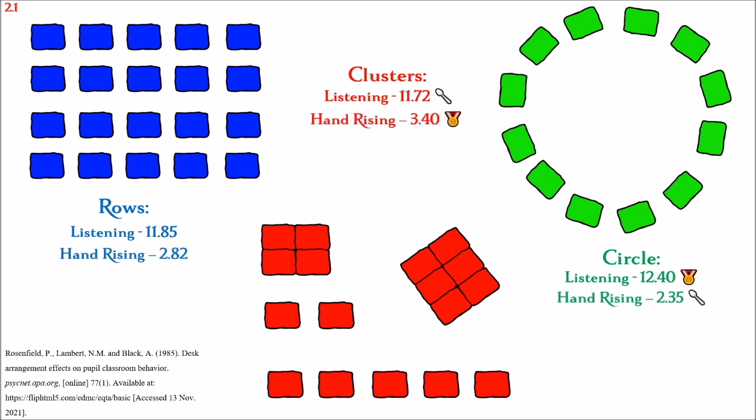Second positive behavior is hand-raising. Rows scored an average of 2.82, clusters scored an average of 3.40, and circle scored an average of 2.35. This shows that the highest participation happened with clusters, while the circles showed the lowest amount of participation.